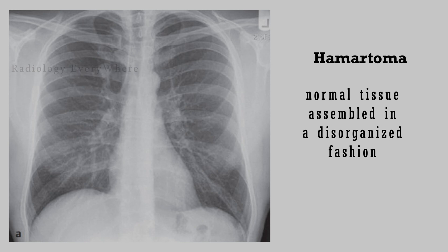benign type calcifications — usually popcorn type — and these are the most helpful signs of hamartomas. When evaluating fat within a hamartoma, it is better to look for visible fat rather than HU value, because the HU value can be falsely elevated from averaging with air.